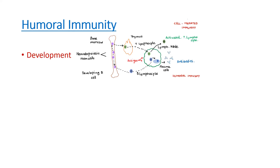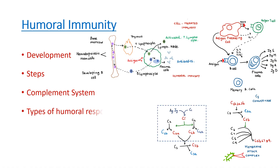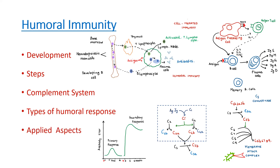To sum up, when asked to write a short note on humoral immunity, start with an introduction, then write about the development of lymphocytes, the different steps of activation of humoral immunity, what happens when the complement system is activated, the types of humoral response, and applied aspects.